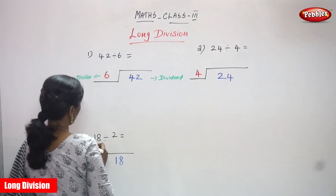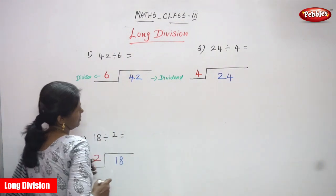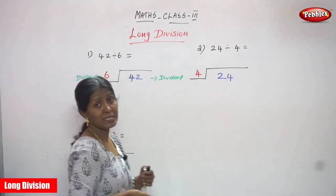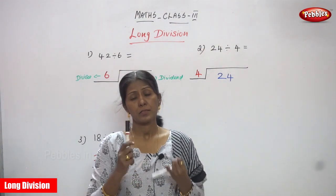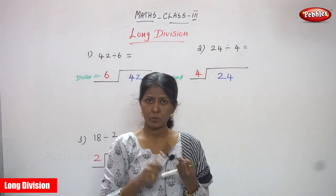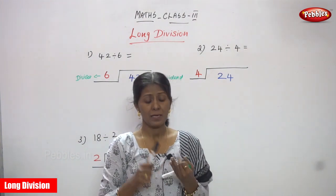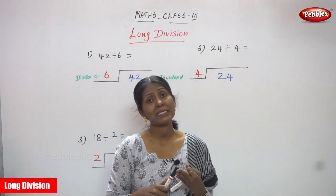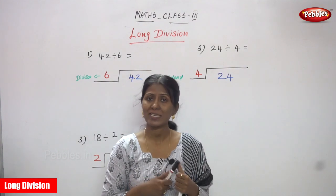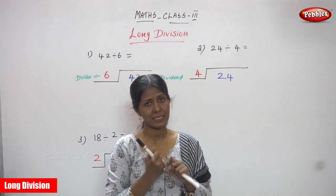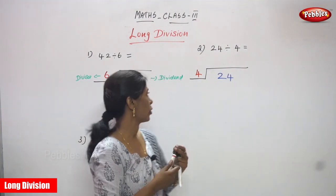So 42 is divided by 6. You must use the 6th table up to 42. So 6 1s are 6. 6 2s are 12. And 6 3s are 18. 6 4s are 24. And 6 5s are 30. 6 6s are 36. 6 7s are 42.